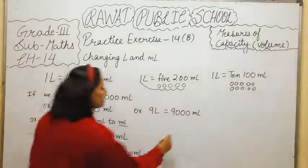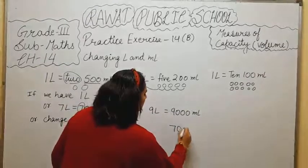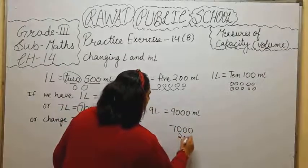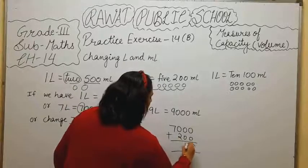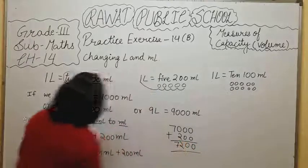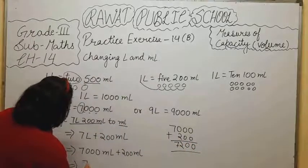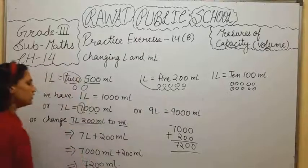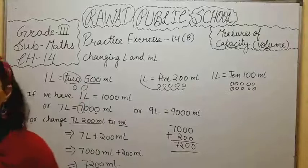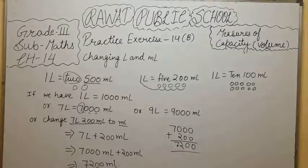When we are going to solve it, 7200 ml. And we are going to add it. So, 0, 0, 2, 7. Here we have total 7200 ml in the total. I hope you all understand how to convert it into liters and milliliters. Now, we are going to do practice exercise 14B.